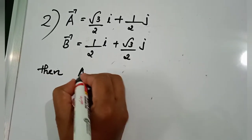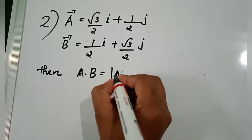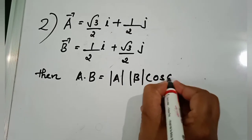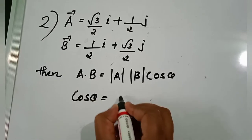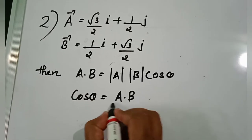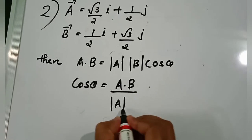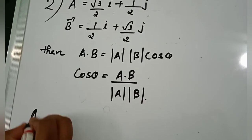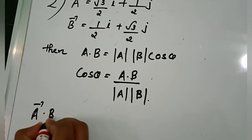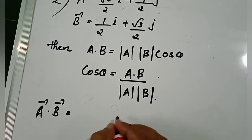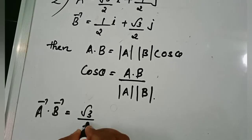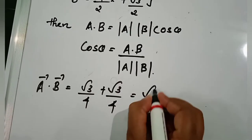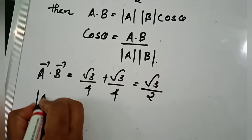We use the dot product formula: a·b = |a||b|cos θ, therefore cos θ = (a·b) / (|a||b|). The dot product a·b equals (√3/4) + (√3/4) = √3/2.